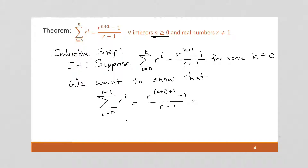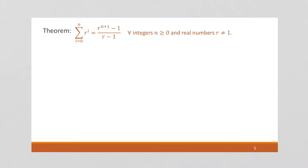We can simplify this, and it's going to be r to the k plus 2 minus 1 over r minus 1. As we've discussed before, we cannot start with the equality — we have to pick a side and manipulate it algebraically until we get to the opposite one. I'm going to start from the left side, from the summation. So we start with the sum from i equals 0 to k plus 1 of r to the i. You've probably got the hang of these summation problems by now — in general, we start by pulling off a term to make it look like our inductive hypothesis.